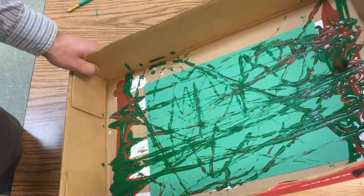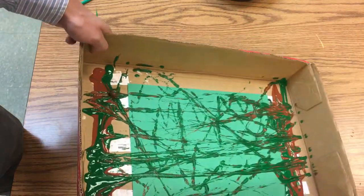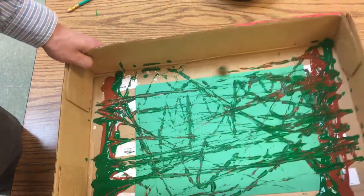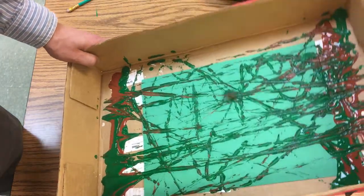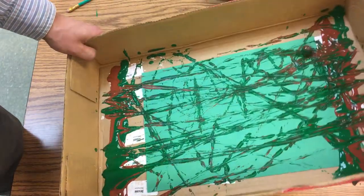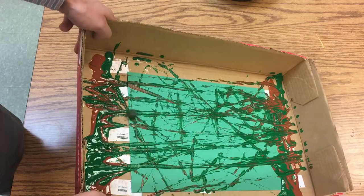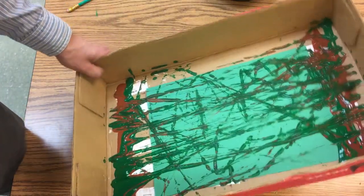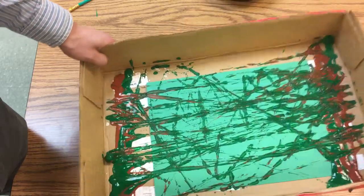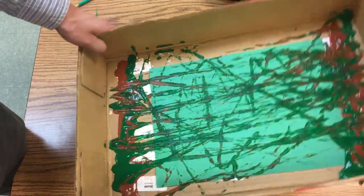because crocodiles are green and alligators are more of a blackish color. Another way you can tell them apart is that the crocodile has a long, thin snout—which we'll be making later—and the alligator has more of a flat snout.